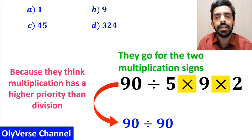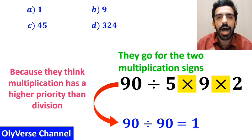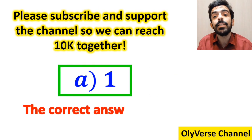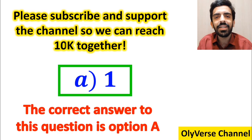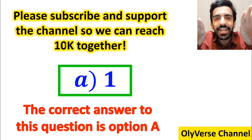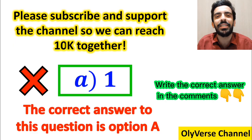So instead of this expression, they write 90 divided by 90, which finally gives them the answer 1. And immediately, they conclude that the correct answer to this question is option A. But I have to say we were tricked, and it's not the correct answer to this question.